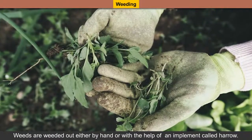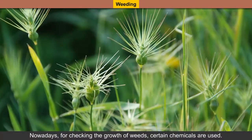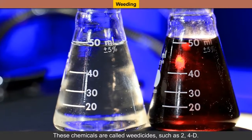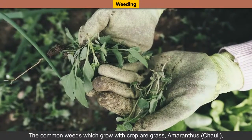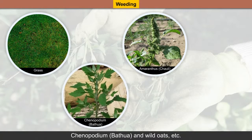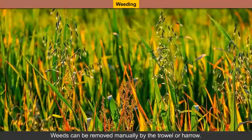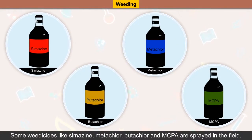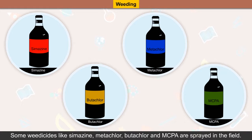Weeds are removed either by hand or with the help of an implement called harrow. Nowadays, for checking the growth of weeds, certain chemicals are used. These chemicals are called weedicides, such as 2,4-D. The common weeds which grow with crops are grass, amaranthus (chawley), chenopodium (bathwa) and wild oats, etc. Some weedicides like cymoxanil, metalachlor, butachlor and MCPA are sprayed in the field.